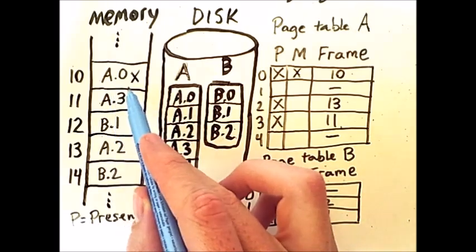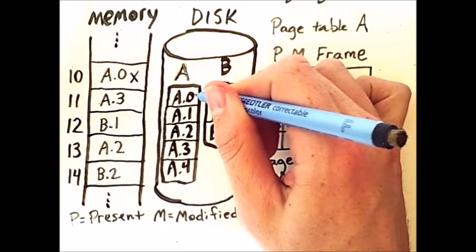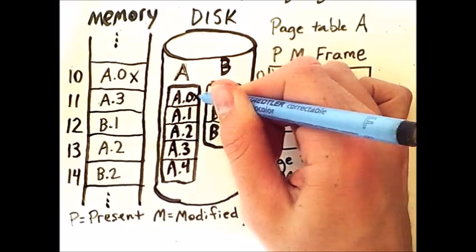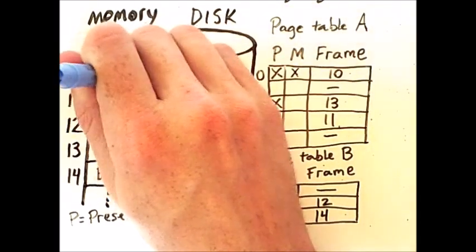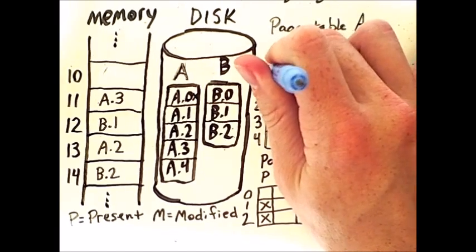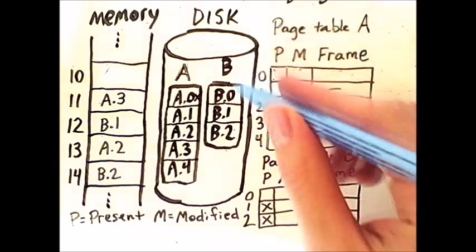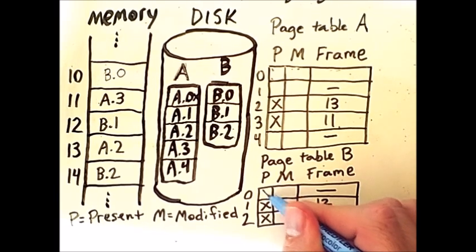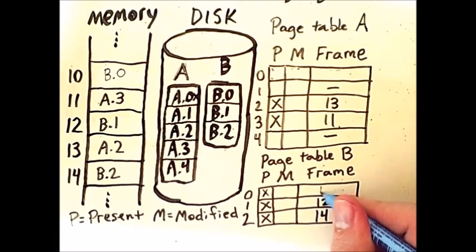If A0 needs to be written back, then because it is modified, we will actually change the contents on the disk to reflect the changes to page A0. Then we will erase the page from memory and indicate that it is no longer present in the page table, before then transferring page B0 into memory. And then also mark that page as present in the page table, and indicate that it is at frame 10.